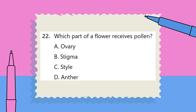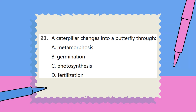Question 23. A caterpillar changes into a butterfly through: A. Metamorphosis. B. Germination. C. Photosynthesis. D. Fertilization.